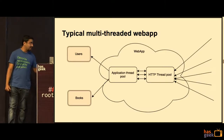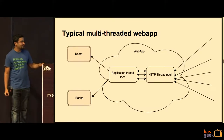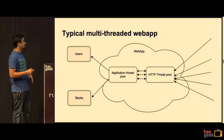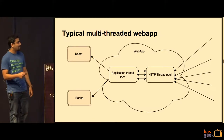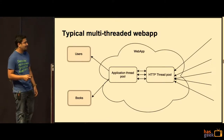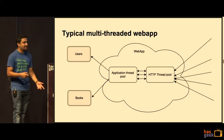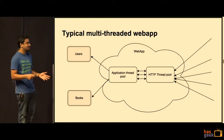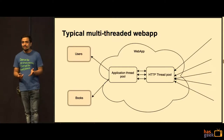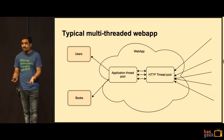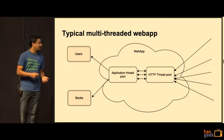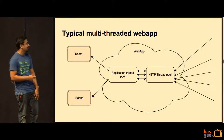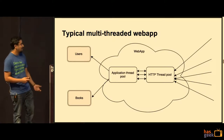I'll take an example of a simple multi-threaded web app. This application has two microservices — users and books — and a main web application. There is a set of requests that come in from users to the web application. There is a dedicated HTTP thread pool, and there is an application thread pool. The application thread pool takes in your request, computes the response to send to the user, and at the same time asynchronously calls users and books — you don't need a call to books to fail because users is taking too much time.